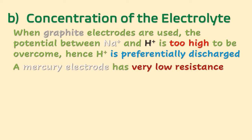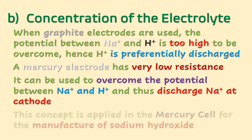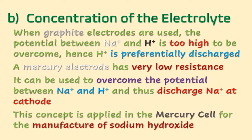In order to discharge sodium ions, we can employ the use of a mercury electrode, which has very low resistance. With this, we are able to overcome the potential between sodium ions and hydrogen ions. This concept is applied in the mercury cell for the manufacture of sodium hydroxide, where the objective is to achieve the discharge of sodium ions instead of hydrogen ions at the cathode.